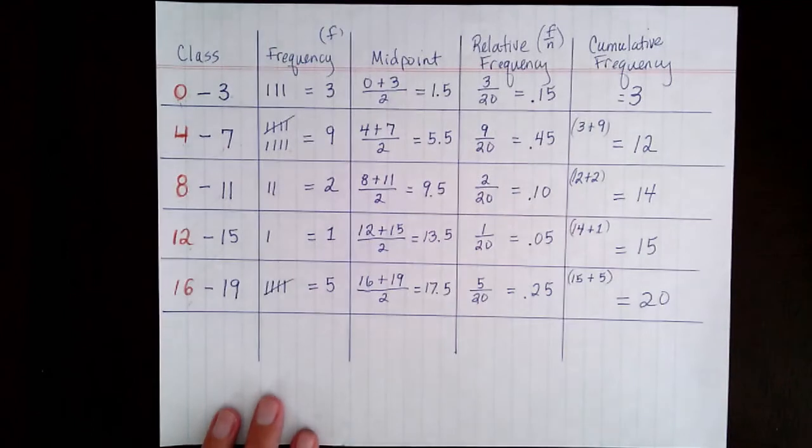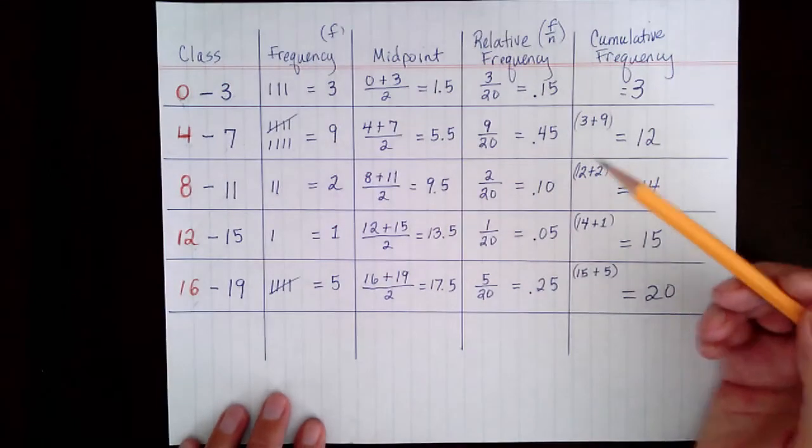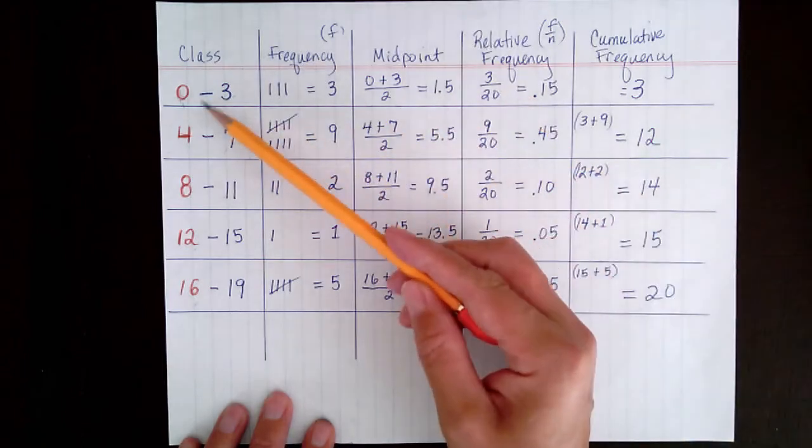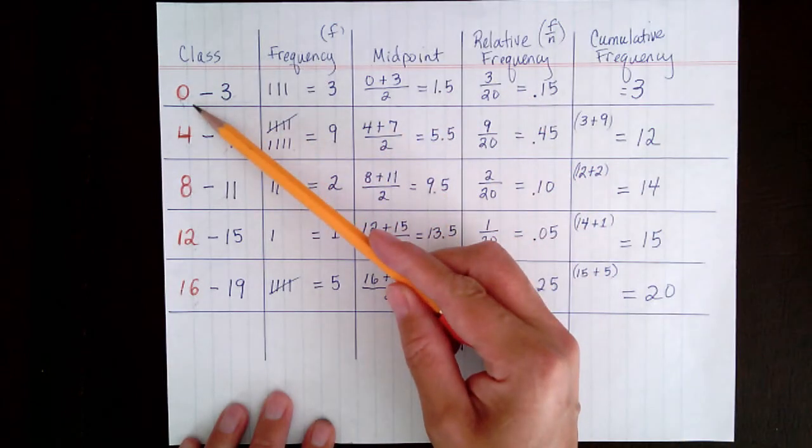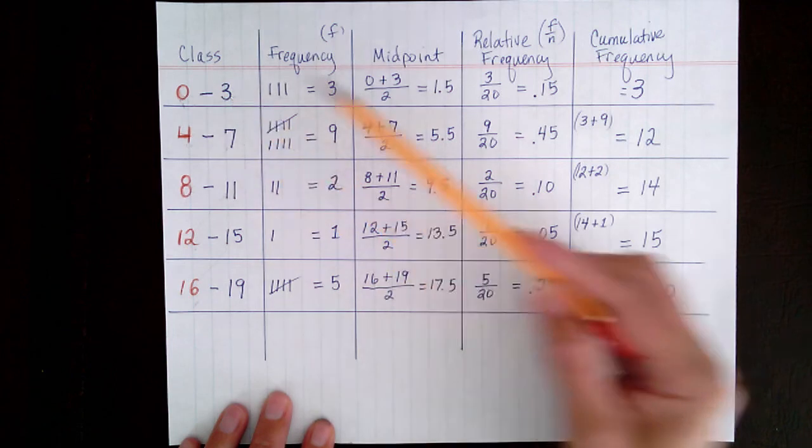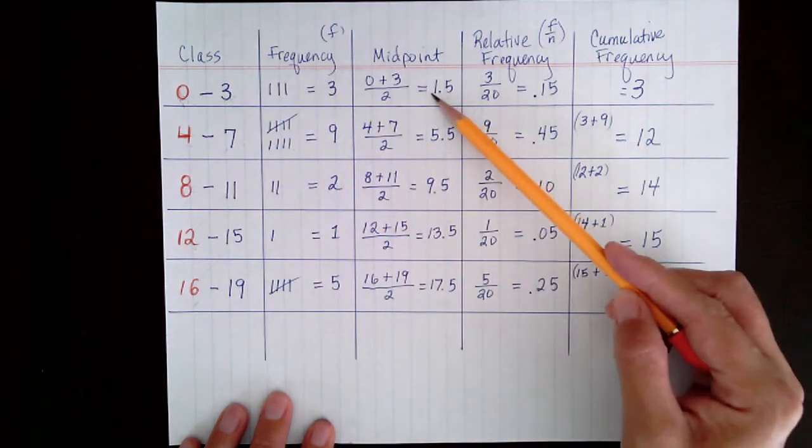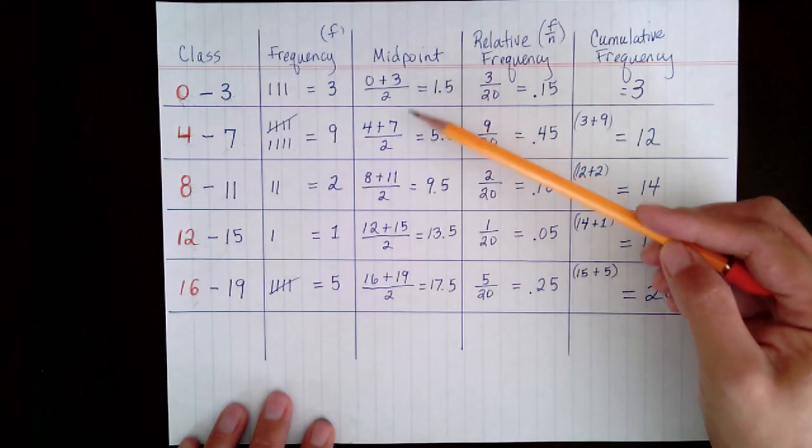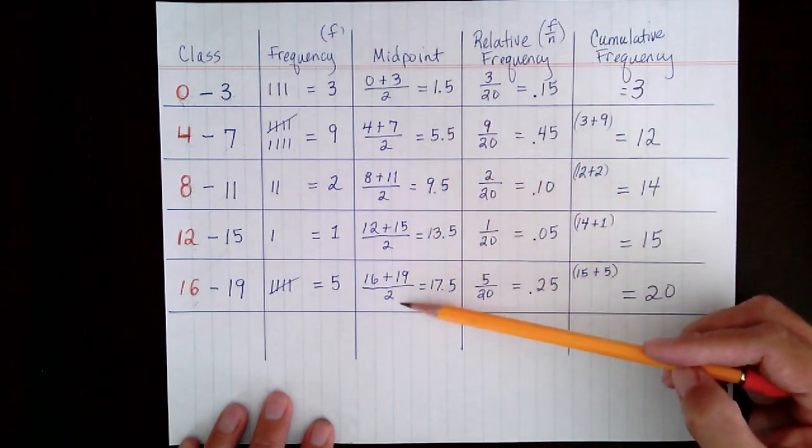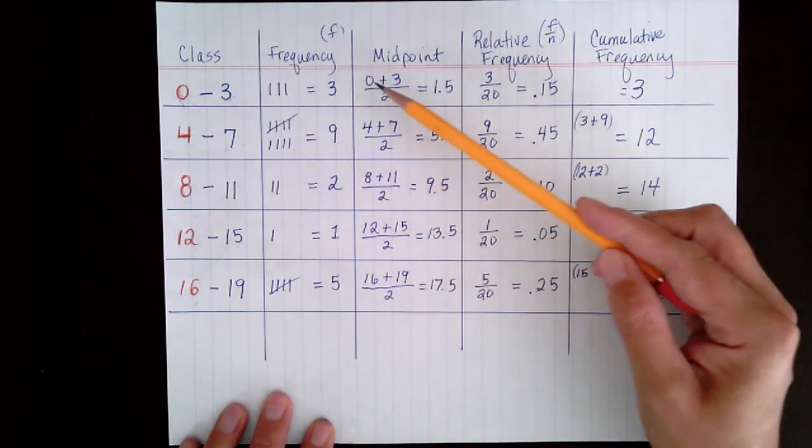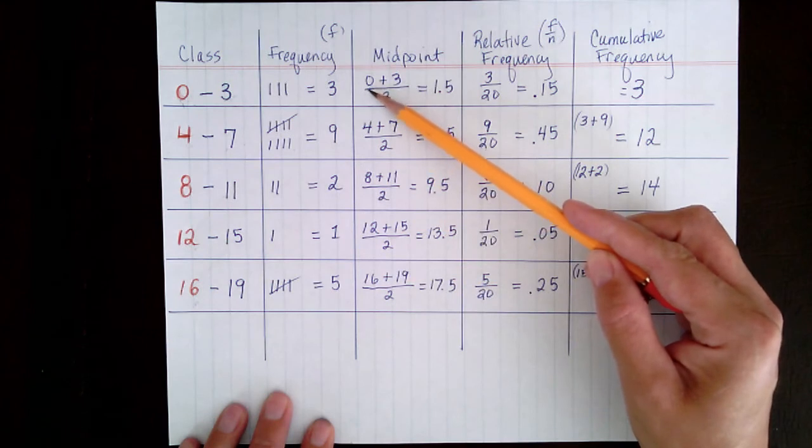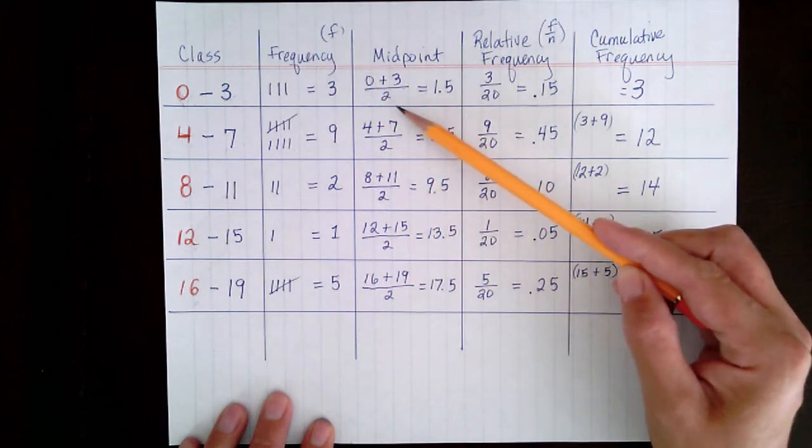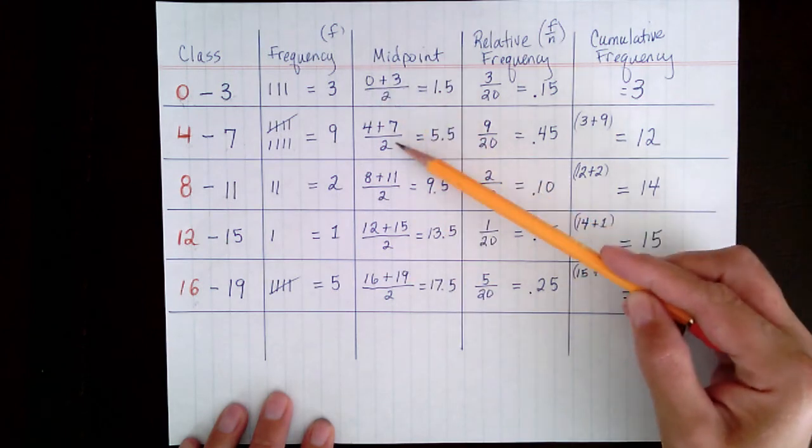The next thing we want to do is locate the midpoints for each class. So to find the midpoint, you take the sum of the class limit and divide by 2. So I've already done this. And to save time, I'll just say, pause this and write it down if you'd like. But just know that all of these are found by taking the sum of the class limits dividing by 2. So I did that for each one.